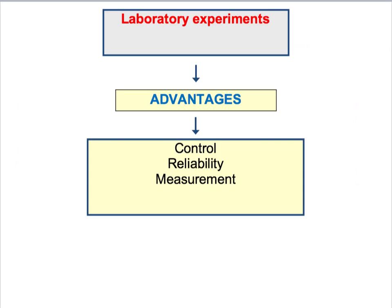Despite their unpopularity in sociology, laboratory experiments do have a number of potential advantages. As I've highlighted, you can control the variables much more than you can in an open environment. Experiments are one of the most reliable ways of doing research — you can carry out the same kind of research in exactly the same way, and if you get similar results you can be more confident about the reliability of your data. Experiments also enable us to measure the relationship between the independent and the dependent variable in quite precise ways.